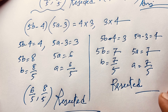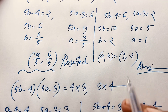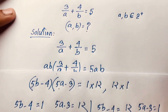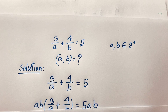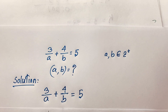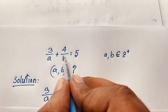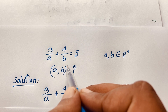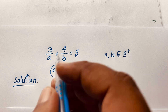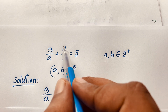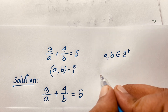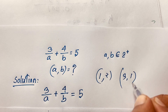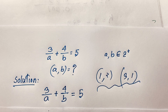Our final answers are (A, B) = (1, 2) and (A, B) = (3, 1). Let's verify: for A=3, B=1: 3 over 3 plus 4 over 1 equals 1 plus 4 equals 5. Correct! For A=1, B=2: 3 over 1 plus 4 over 2 equals 3 plus 2 equals 5. Correct! So the final answers are (A, B) = (1, 2) and (3, 1).